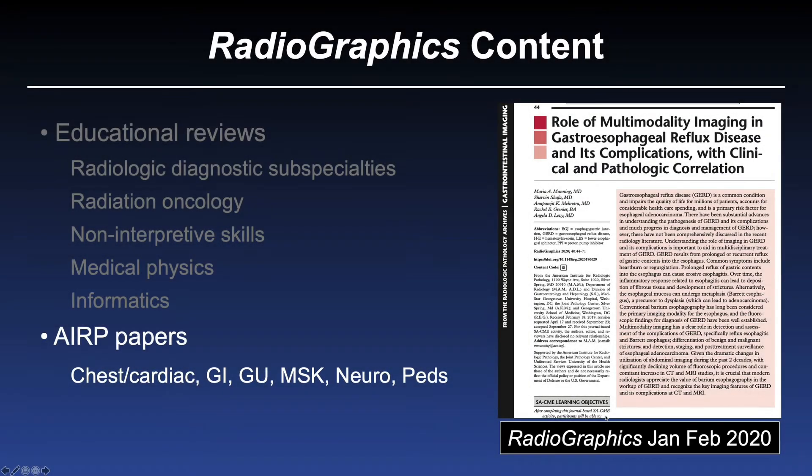In addition to our standard educational reviews, we also publish articles authored by the faculty of the American Institute for Radiologic Pathology. Here on the right is an example of one of our more recent AIRP papers — a GI paper from Dr. Maria Manning, published in the January-February 2020 issue on gastroesophageal reflux disease. You'll see these articles in all six listed subspecialty areas appearing regularly within the journal.